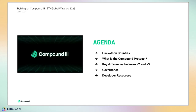In this workshop, we're going to go over the hackathon bounties for Compound Grants. I'll tell you a little bit about the Compound Protocol in case this is the first time you're hearing about it. I'll highlight key differences between Compound V2 and Compound V3. Compound V3 came out in summer of last year. I'll go over the governance system for protocol community governance, and also share some developer resources so you can get started working on your project immediately.